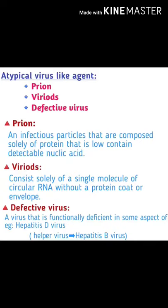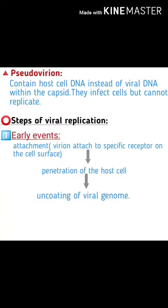A defective virus is a virus that is functionally deficient in some aspect of replication. Example: Hepatitis D virus requires Hepatitis B virus as a helper virus. A virocell contains host cell DNA instead of viral DNA within the capsid — they can infect cells but cannot replicate independently.